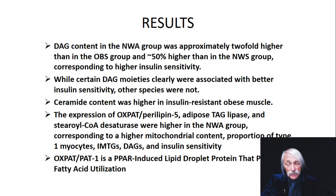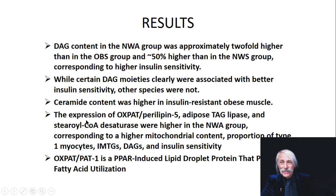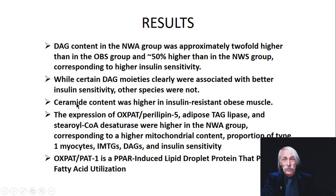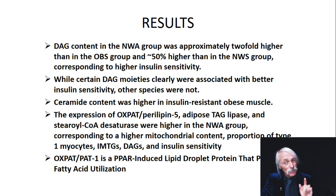Ceramide content was higher in insulin-resistant obese muscles. So DAG content was higher in athletes, but ceramide content was higher in the obese muscle — now we're seeing a difference between DAG and ceramide. Ceramide is amide-linked, which alters a lot of the physical chemistry of that molecule. Ceramide does programmed cell death — not in muscle cells — but maybe in cancer cells.